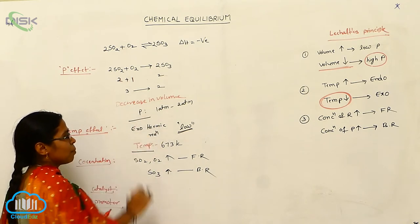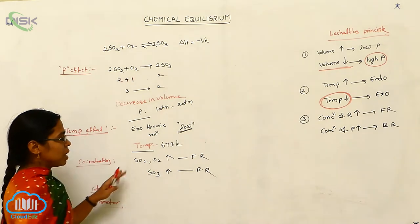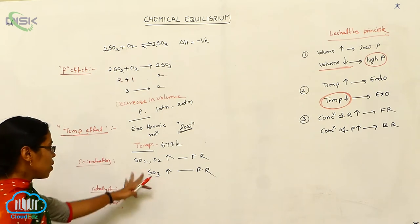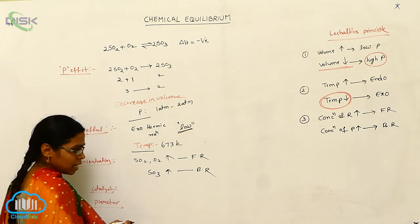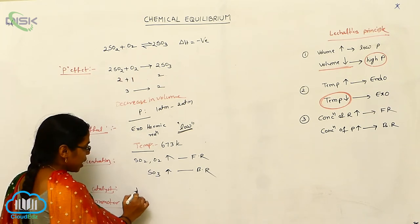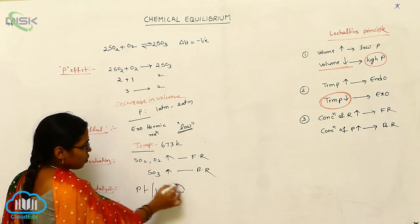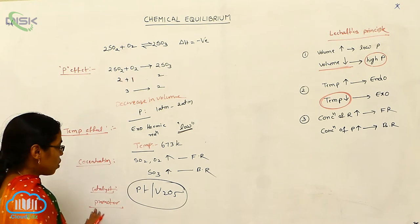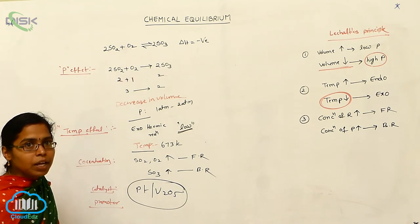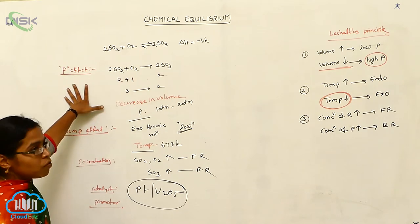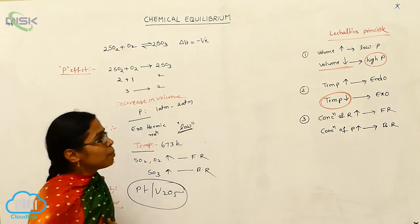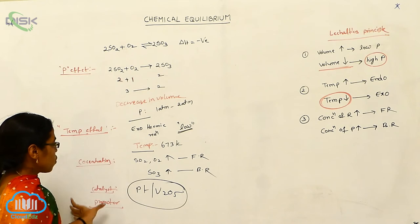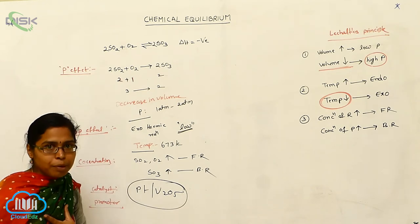Here we are using optimum temperature and optimum pressure. Based on concentration, we determine the shifting of chemical equilibrium to either the forward or backward side. The catalyst used is platinum in the presence of V2O5 (vanadium pentoxide), and the promoter is alumina. These are the applications of Le Chatelier's principle.